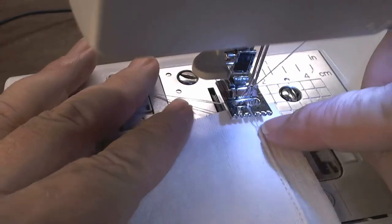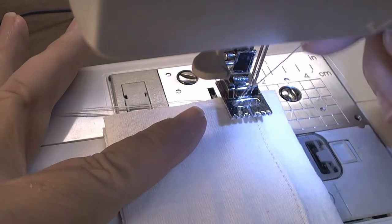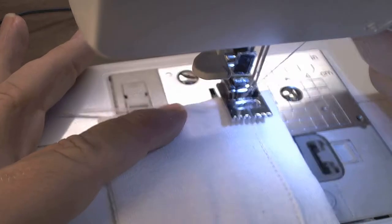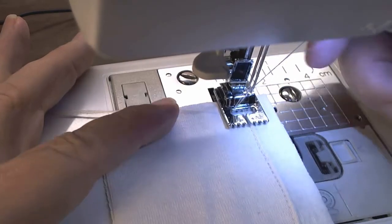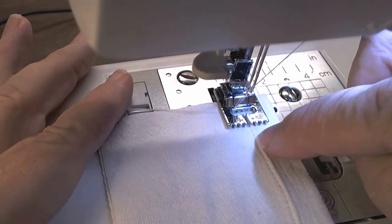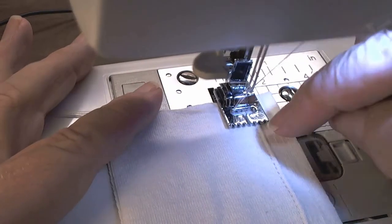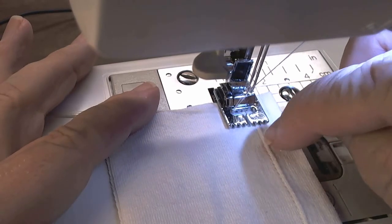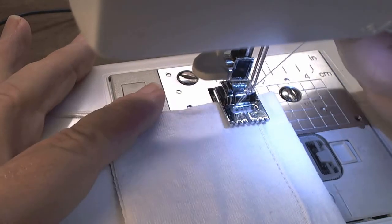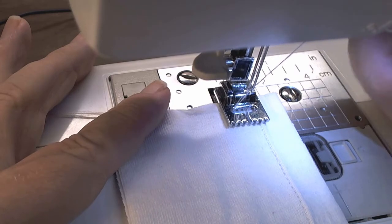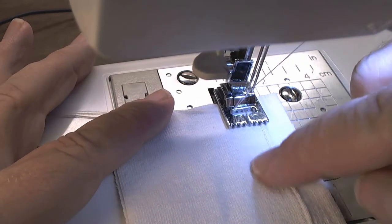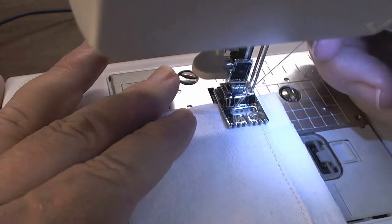Now since we have one row done here, when you put this in here, you can decide this is one notch over. It's going to be really close to this one. This is two notches over. It'll be a little more space, two millimeters between. If you want three millimeters, you go to the third space over. And then these will be three millimeters from each other. I'm going to use two.